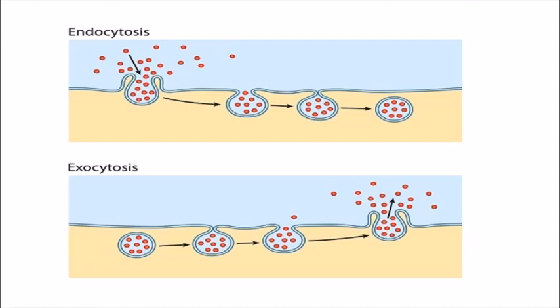Exocytosis is the opposite of endocytosis — it is the removal or exit of substances from inside the cell to the outer environment, so that is called exocytosis. Whatever unwanted substance is inside the cell, it is removed in exocytosis. Whatever useful material needs to come inside the cell enters through endocytosis. These are the two main activities that consume cellular energy.